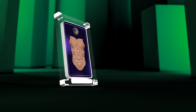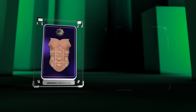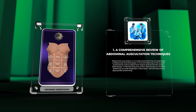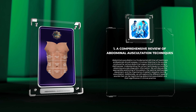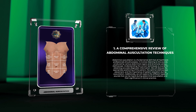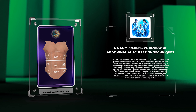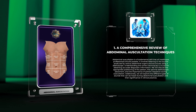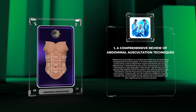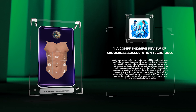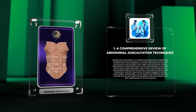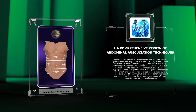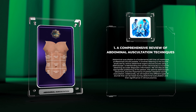Abdominal auscultation is a fundamental skill that all healthcare professionals should possess. It involves listening to the sounds produced by various abdominal organs and structures using a stethoscope. Understanding the correct techniques is crucial for obtaining accurate diagnostic information. We will discuss the appropriate positioning of the patient, the optimal stethoscope placement, and the importance of patient relaxation during auscultation.